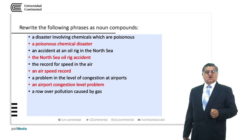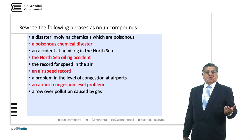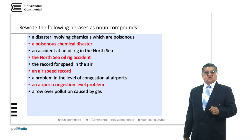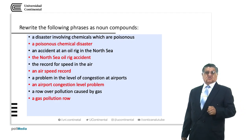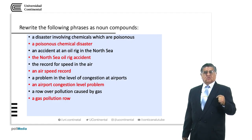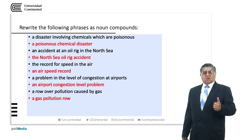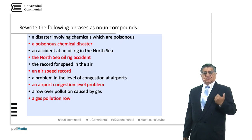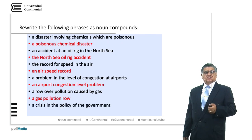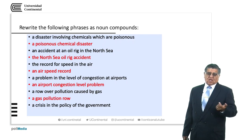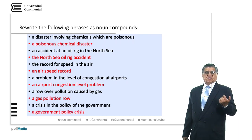A row over pollution caused by gas — we are talking about a row that is about pollution by gas: 'gas pollution row'. 'Row' in this case is a kind of discussion. One of the things you need to remember is that in English, most words will have more than one meaning. We know 'row' refers to a line of people, but in this case it is a kind of discussion. A crisis in the policy of government — we are talking about a crisis based on government policy.